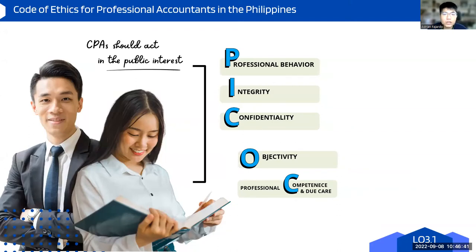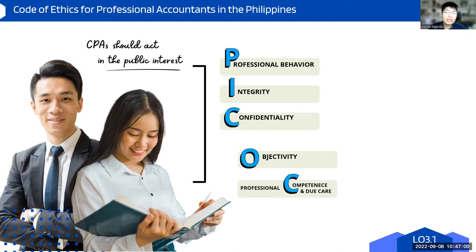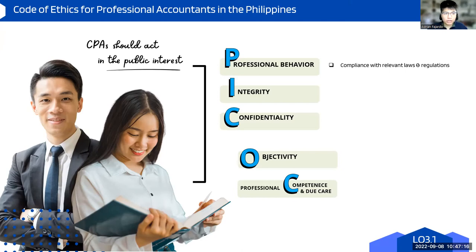There's a Code of Ethics for Professional Accountants in the Philippines. The general idea is that CPAs should act in the public interest — as certified public accountants, they are expected to act in the public interest. There are five things they should have, which you can remember as PICK-O-C. First: professional behavior, meaning compliance with relevant laws and regulations from standard setting councils and government agencies.